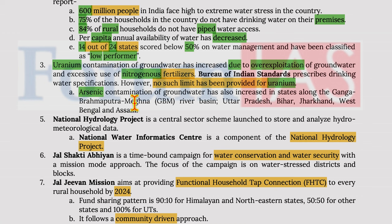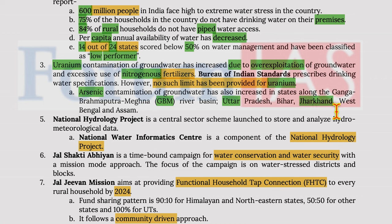Arsenic contamination of groundwater has increased in states lying in the Ganga–Brahmaputra–Meghna river basin, including Uttar Pradesh, Bihar, Jharkhand, West Bengal, and Assam.